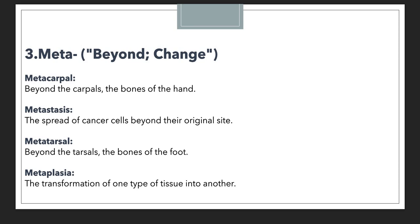When we want to denote something beyond the tarsals, we use the term metatarsal. In each of these examples, one thing is common: we are using meta to denote beyond. Then we have metaplasia. Metaplasia means the transformation of one type of tissue into another. Here we are using meta to indicate change — transforming or changing. This is an example of meta used for change, while the previous three examples used it for beyond.